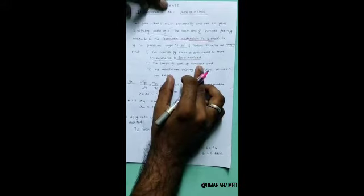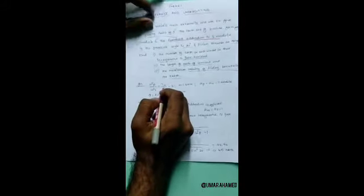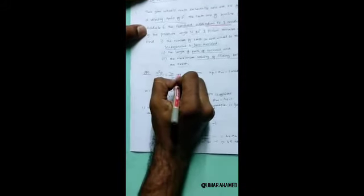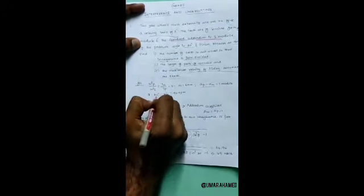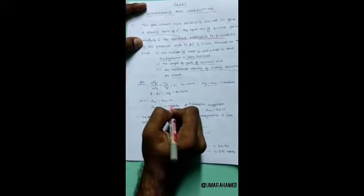The length of path of contact is the second part. The third is maximum velocity of sliding between teeth. Given: Omega_P by Omega_G equals TG by TP equals 3. Module M equals 6 mm. A_P, A_W equals A_W times M. Pressure angle phi equals 20 degrees. N_P equals 90 rpm.